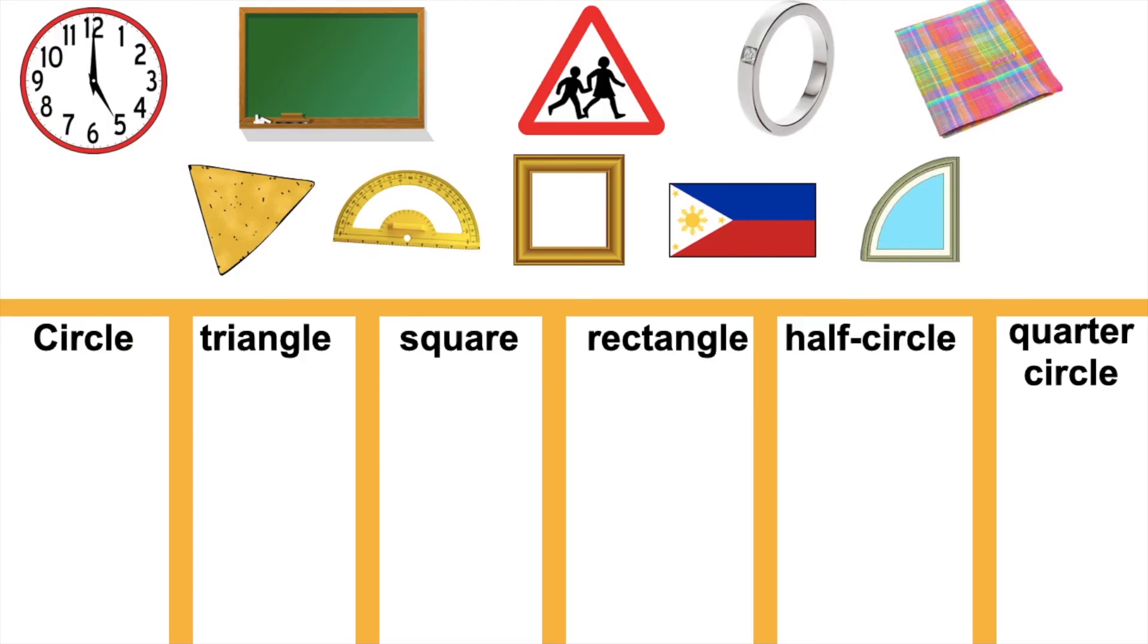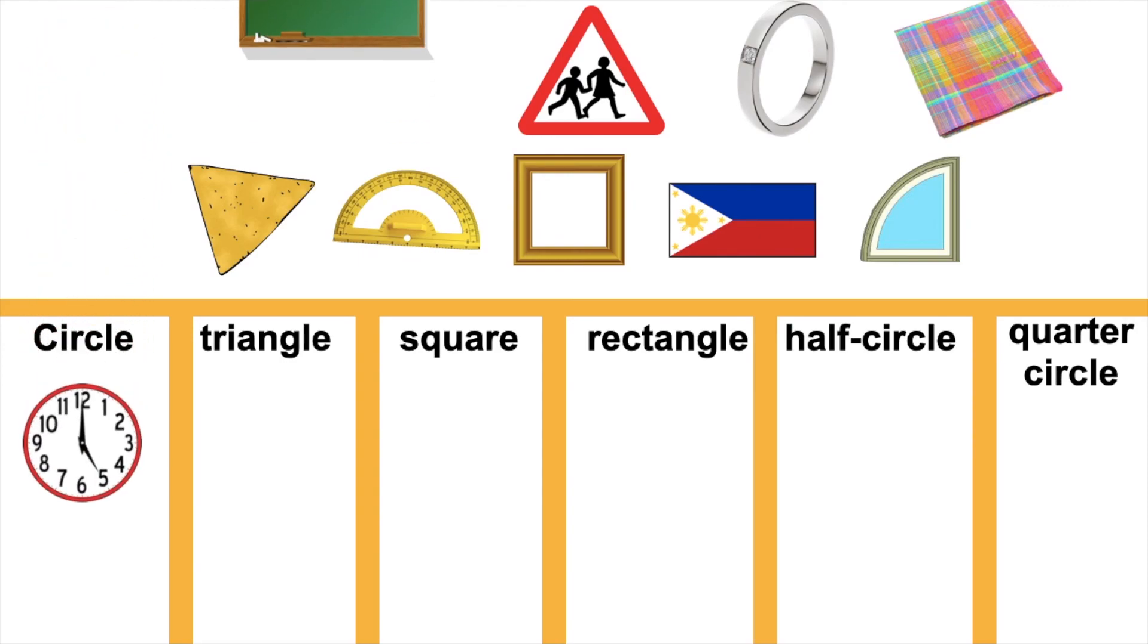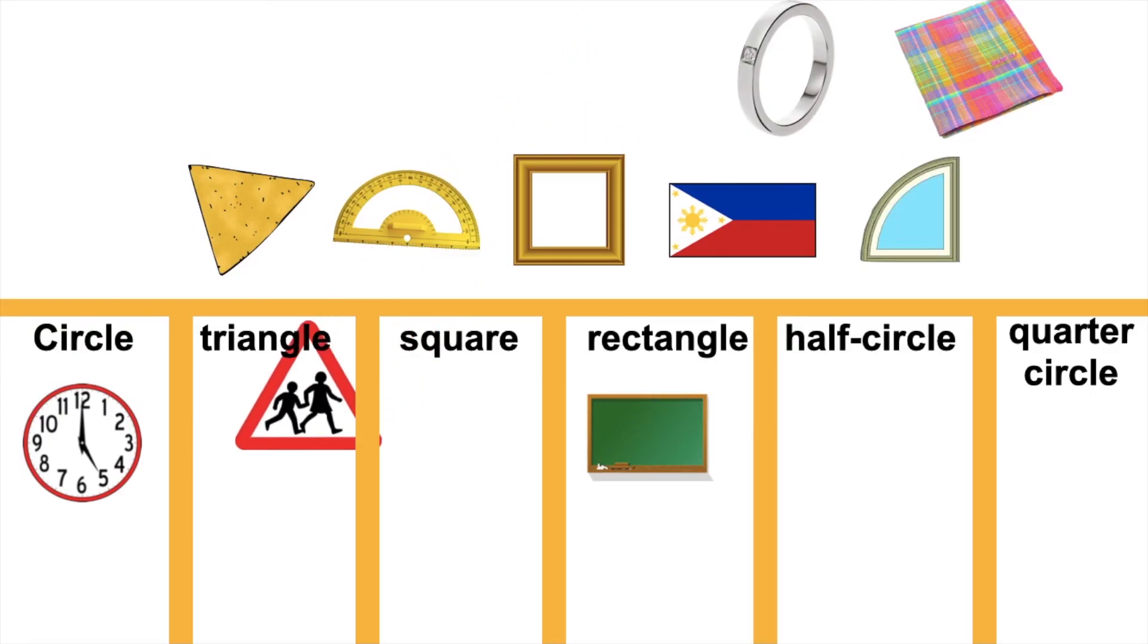What is the shape of the clock? That's correct! It's circle. How about the backboard? It is? Good job! It's rectangle. How about this signage? What is the shape? Very good! It's triangle.